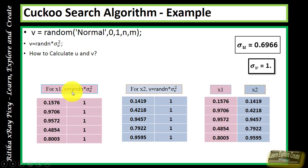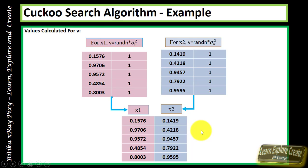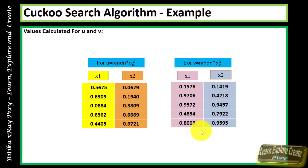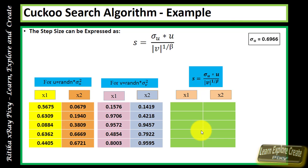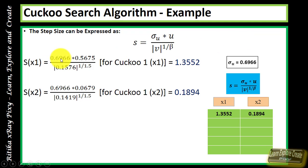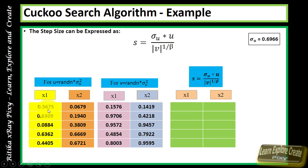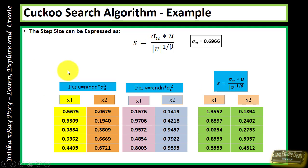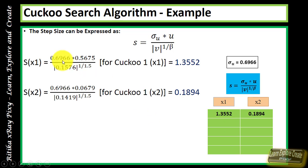For v, again choose a uniformly distributed random number, then put the value of sigma_v to calculate v for x1 and x2. Now that u and v are calculated, we can compute the step size for each cuckoo. Substituting sigma_u, u, and v into the step size formula for x1 and x2 for each cuckoo gives the step size values. Then we update the position values for all cuckoos.